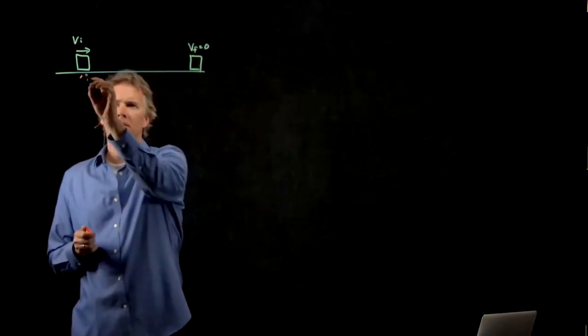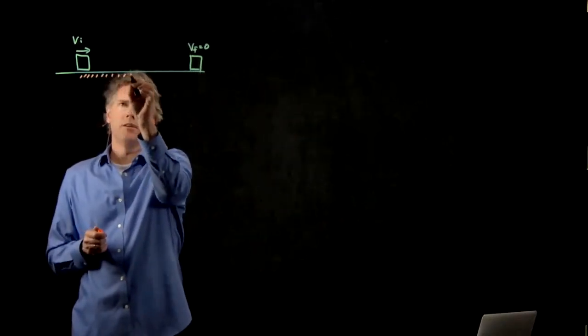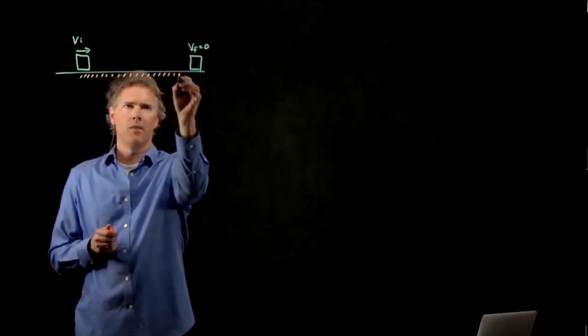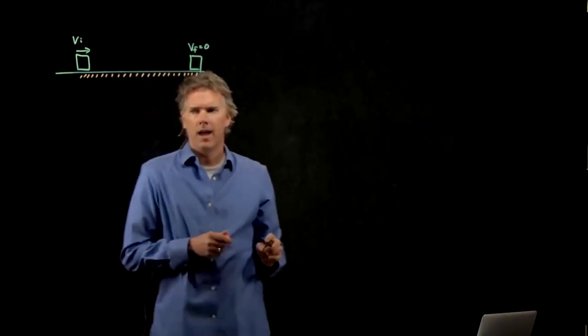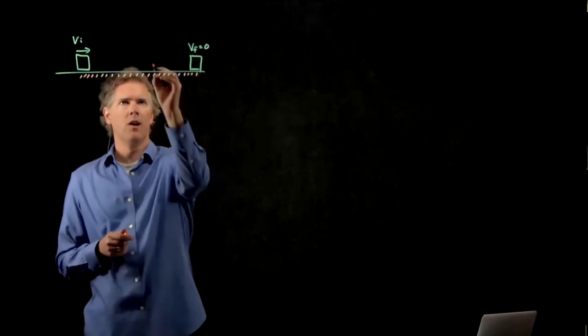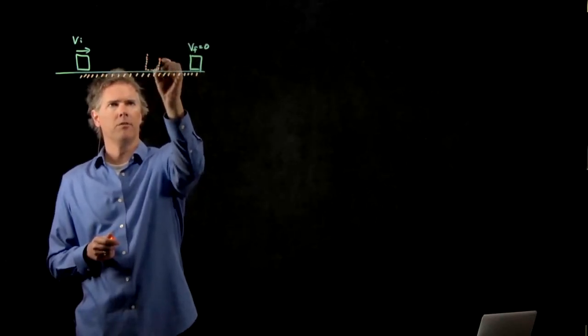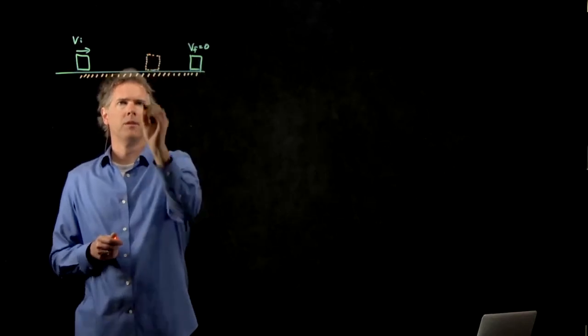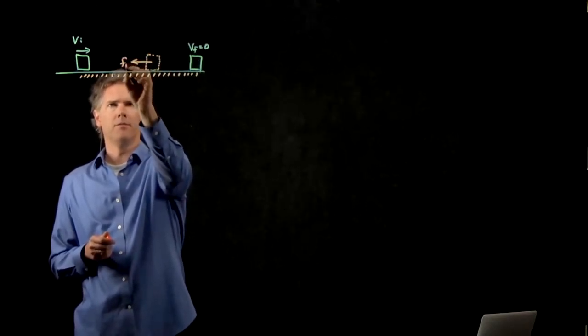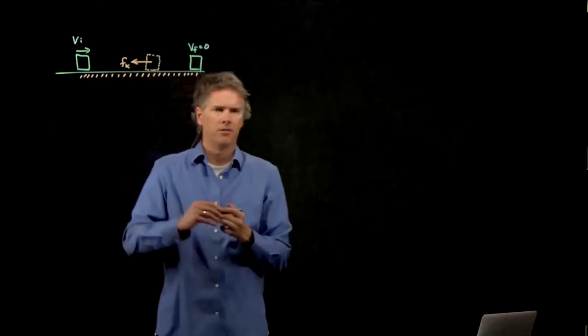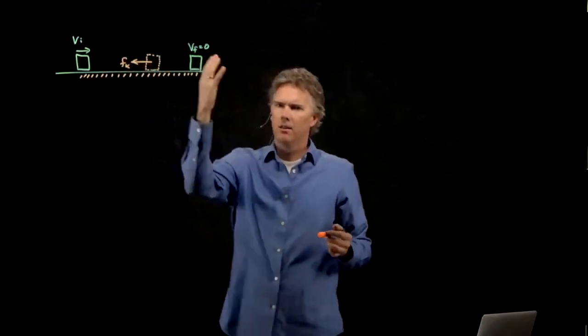We know that there's got to be some sort of frictional force here that is slowing down the box. And as the box moves along, what direction is that frictional force? It's got to be to the left. The box is sliding to the right. The force to the left is trying to slow it down.